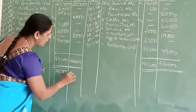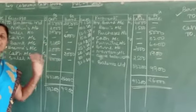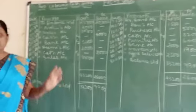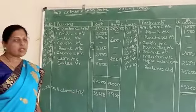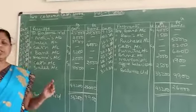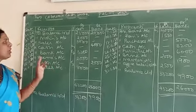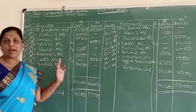So students, whenever you receive a check, enter it in the cash column. Whenever it is paid by check, enter it in the bank column. This is all for our two-column cash book, and in the next class we will start again with the two-column cash book. This problem will come for twelve months.